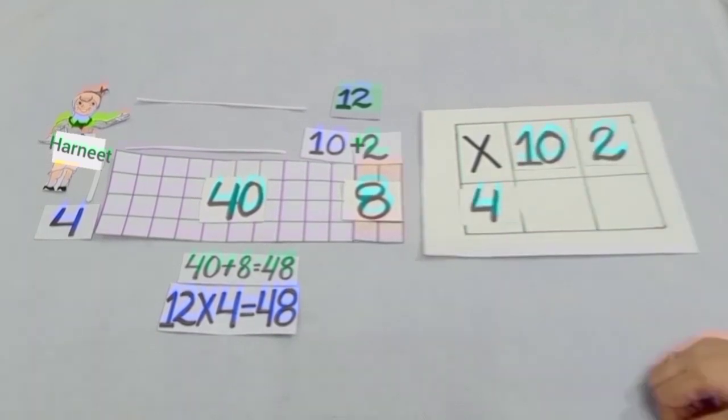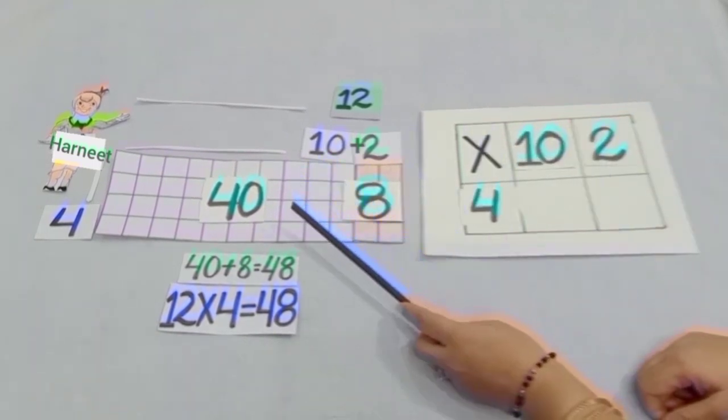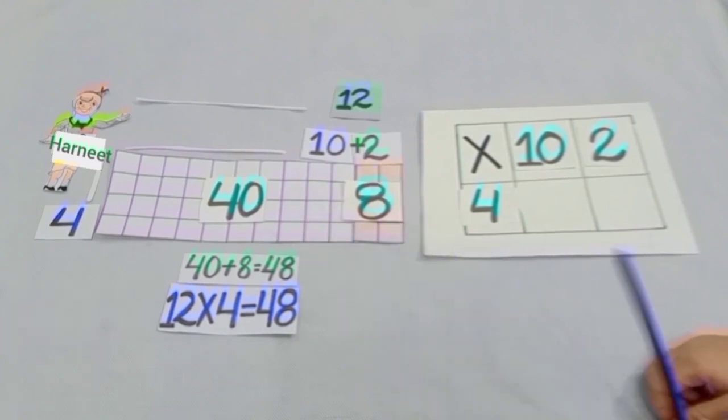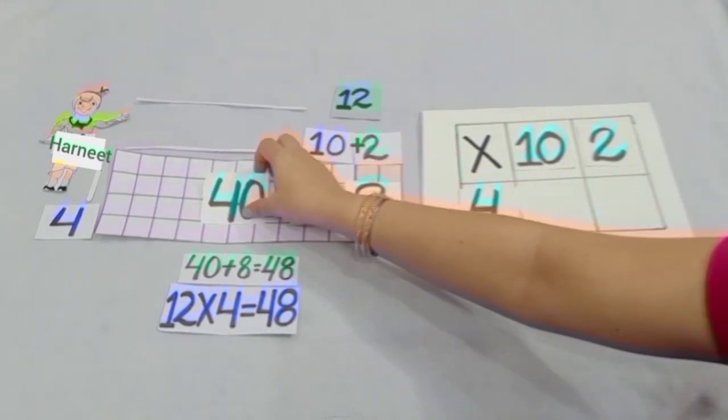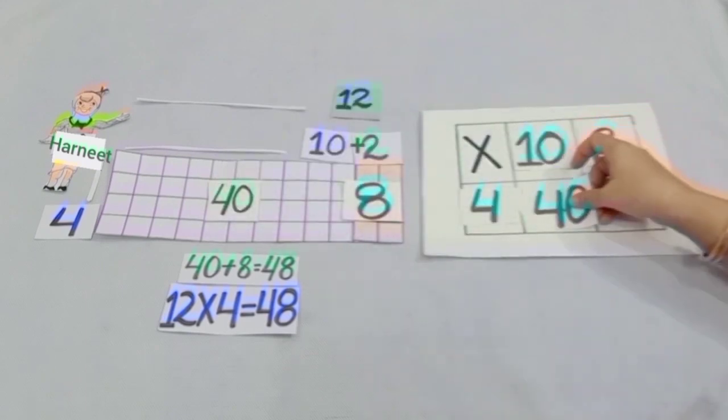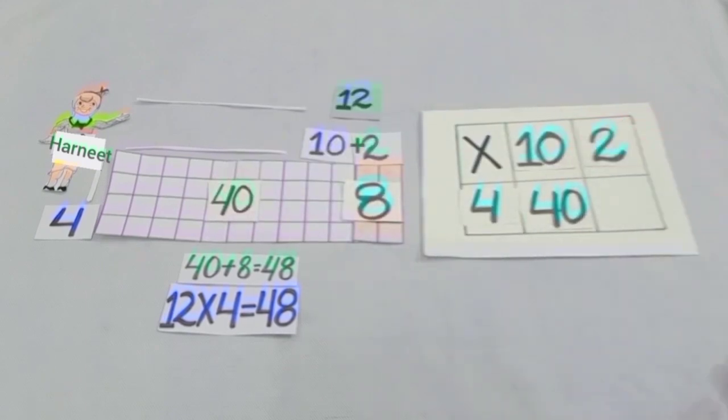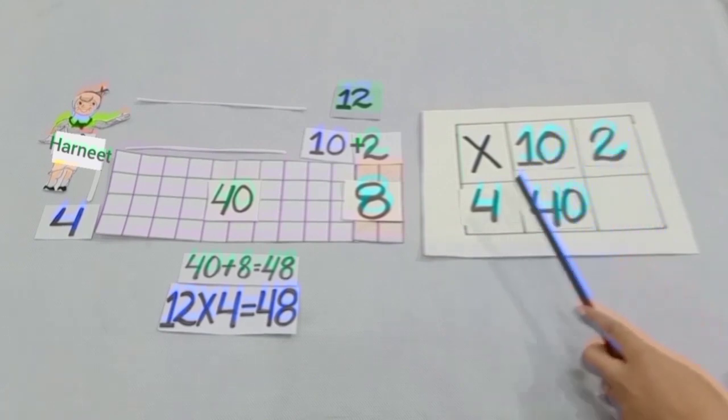Students, see there are white boxes and their number is 40. We will write 40 here, and you can also see 10 into 4 is equal to 40.